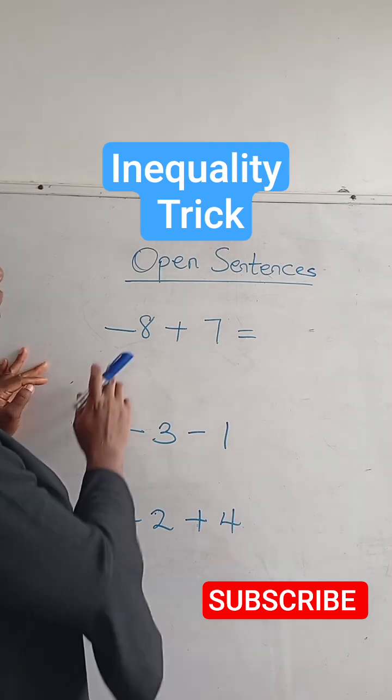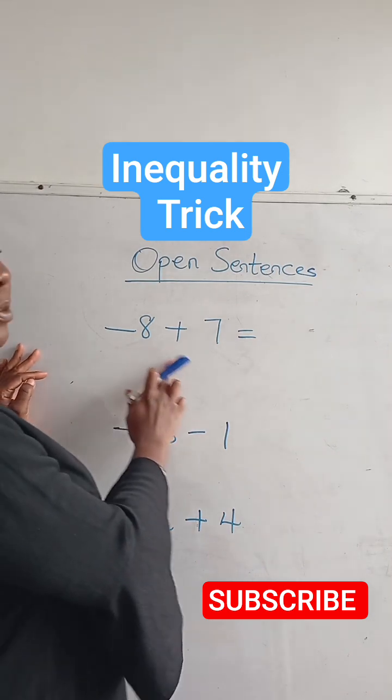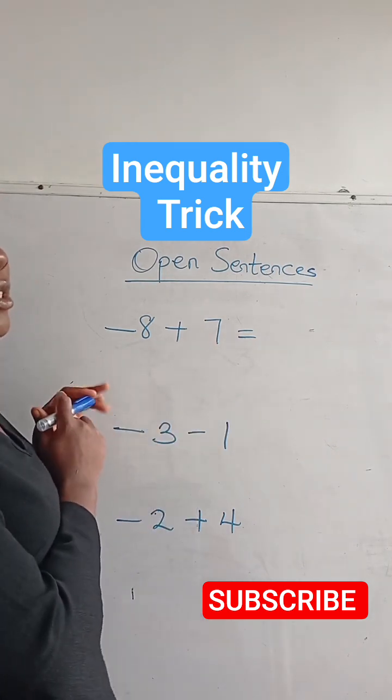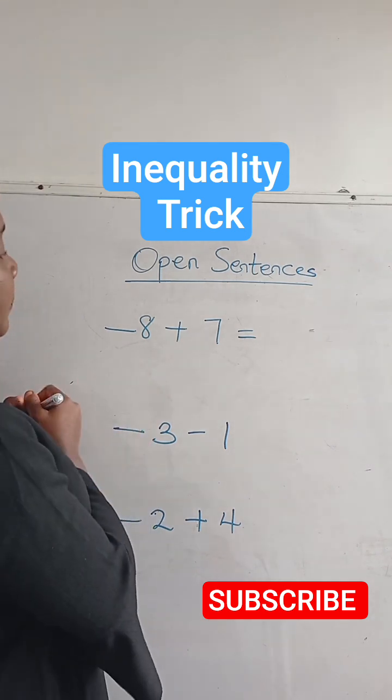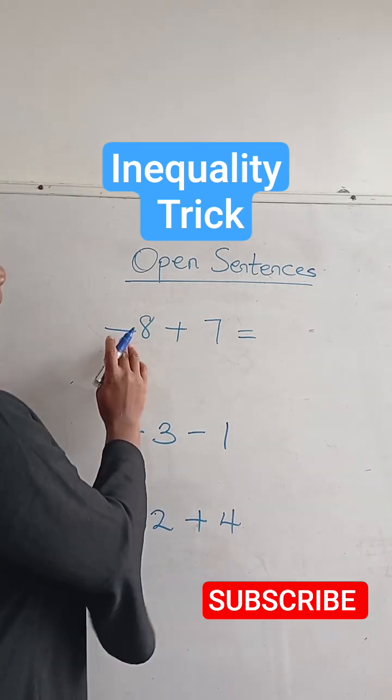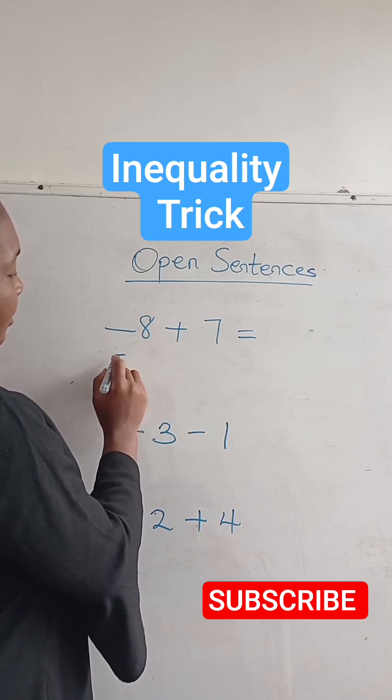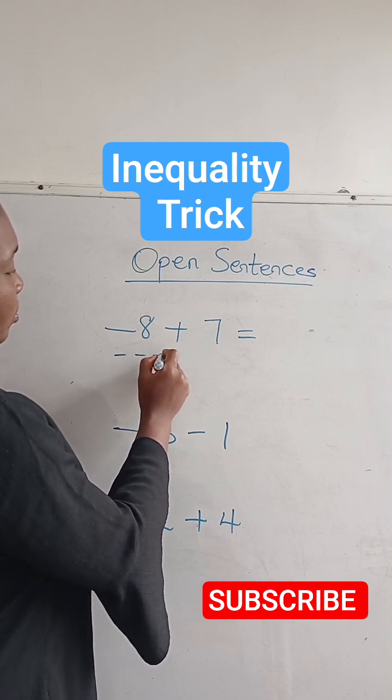Alright, so here we have minus eight plus seven. When you want to show students how to solve things like this, what you simply do is you're going to count eight minus signs: minus one, two, three, four, five, six, seven, eight.